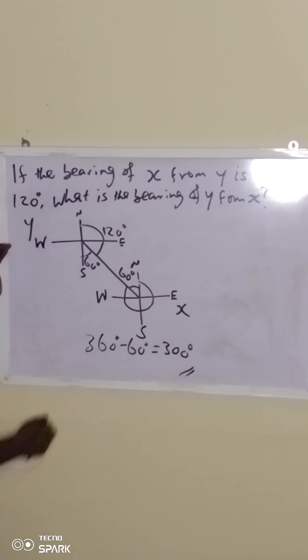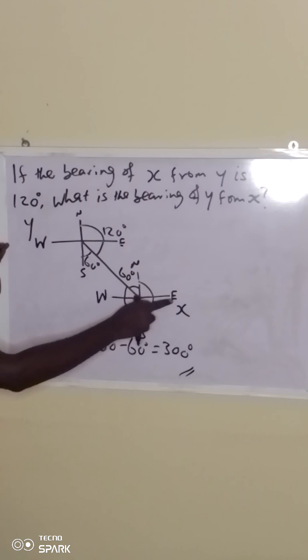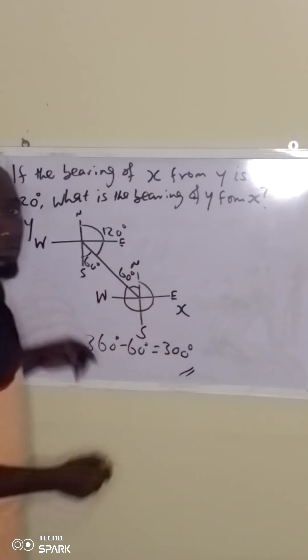That means the bearing of y from x is 300 degrees. From the north in clockwise direction to this point is 300 degrees.